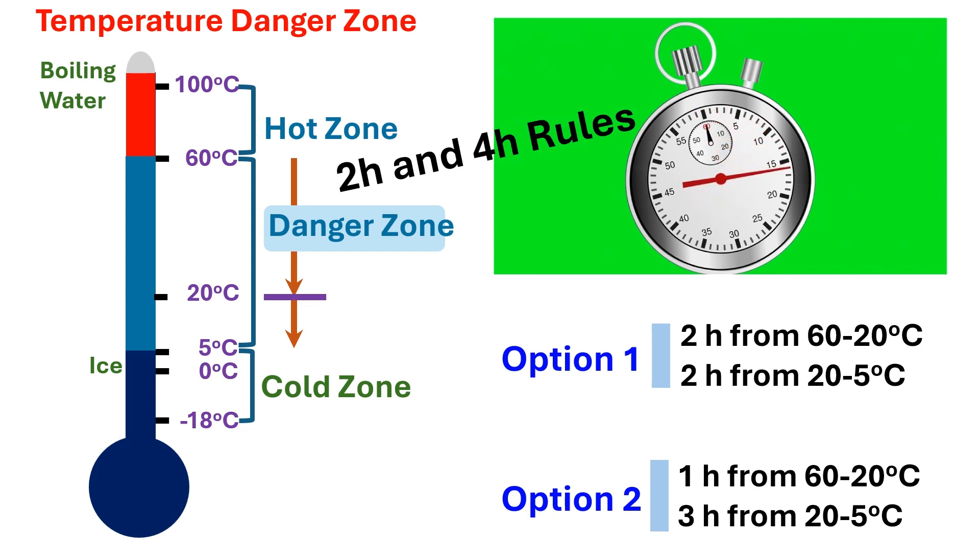It is important to mention that a temperature of 60 to 20 degrees C is more dangerous than a lower temperature of 20 to 5 degrees C, since the optimum temperature of most microbes is around 37 degrees C.